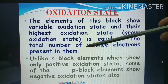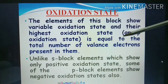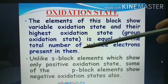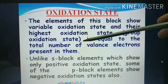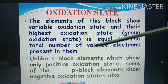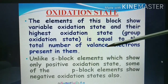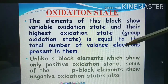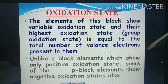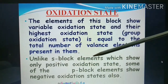In the boron group, there are only three electrons in the outermost shell, therefore the group oxidation state of boron group elements is three. Carbon group elements have four, nitrogen group five, oxygen group six, halogens seven, and for other noble gases it is eight.